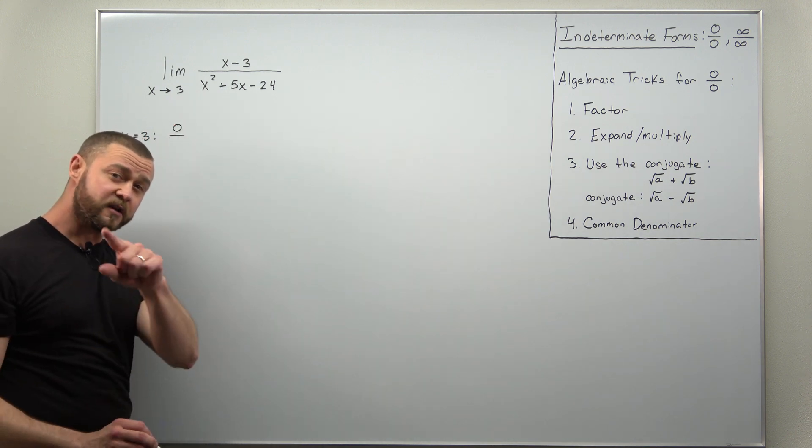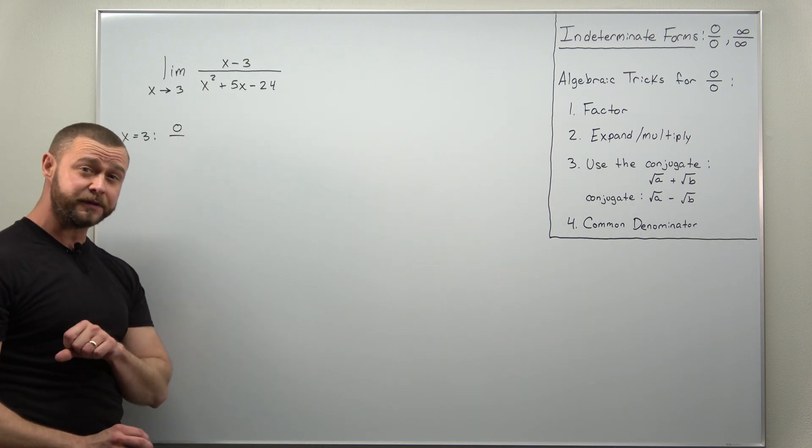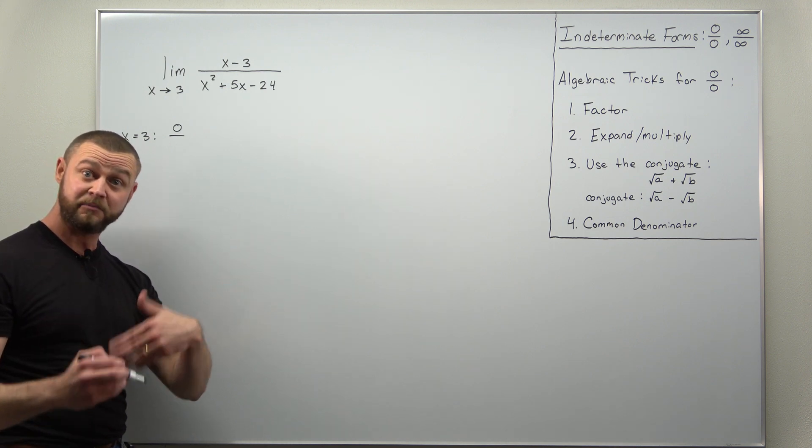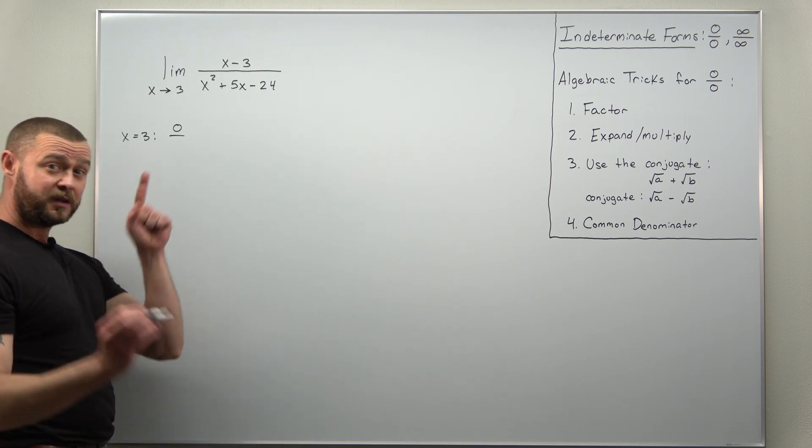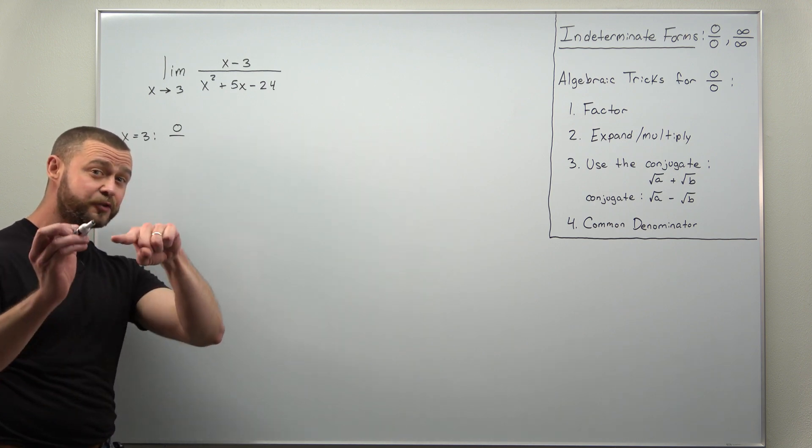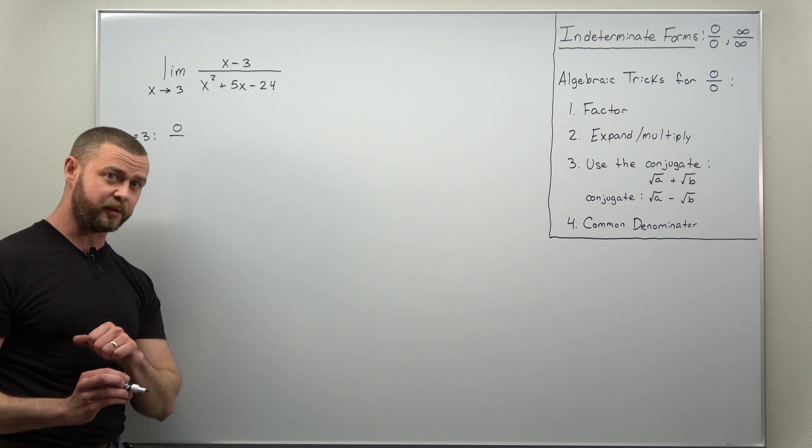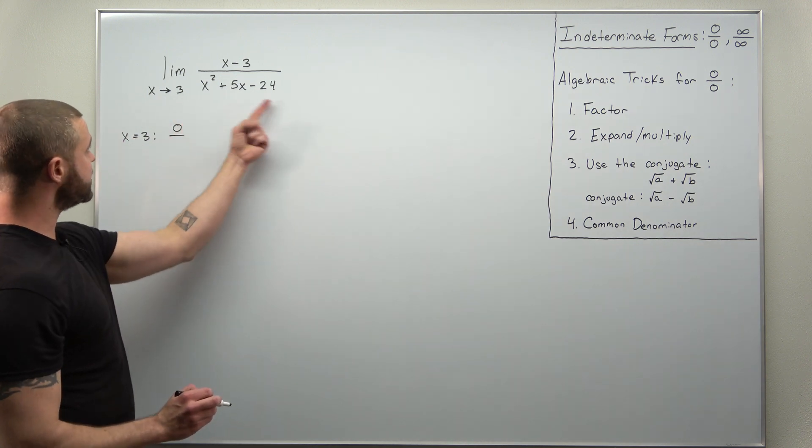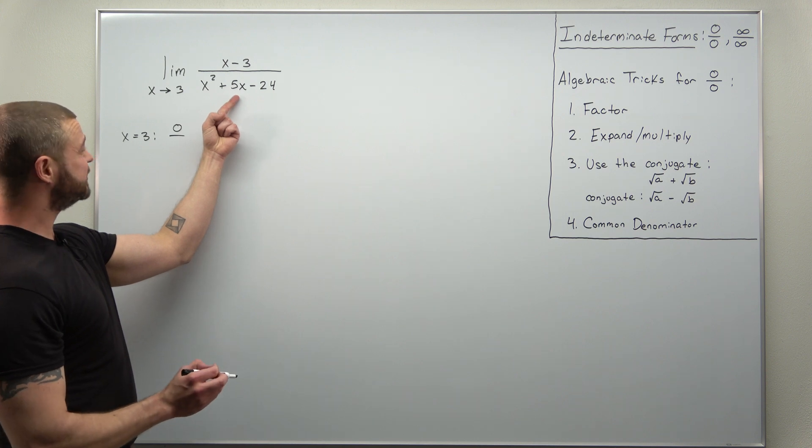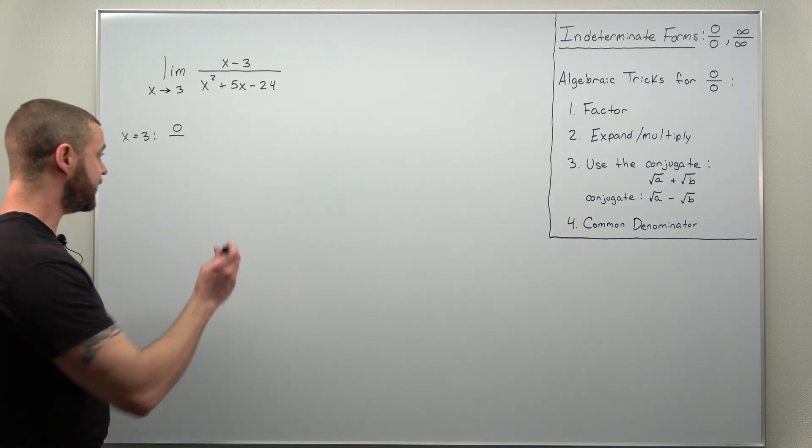All right and you can see in the numerator three minus three that's going to give you zero. But what's more important here is that we also see if we get zero in the denominator. Remember zero divided by a number like five is zero, but division by zero is undefined. But what we're looking for is zero over zero for an indeterminate form. So if you plug three in looks like we're going to get nine plus fifteen, that's positive twenty-four minus twenty-four, we get zero.